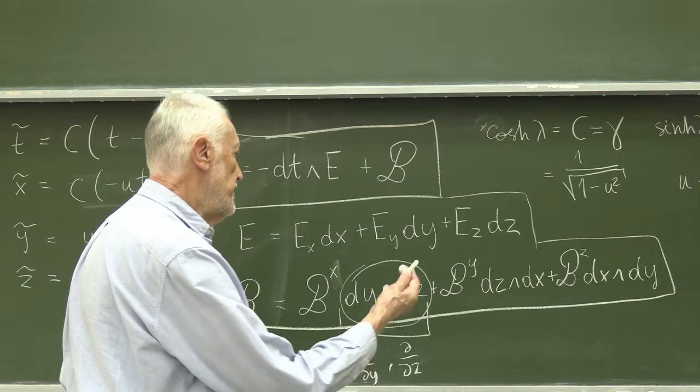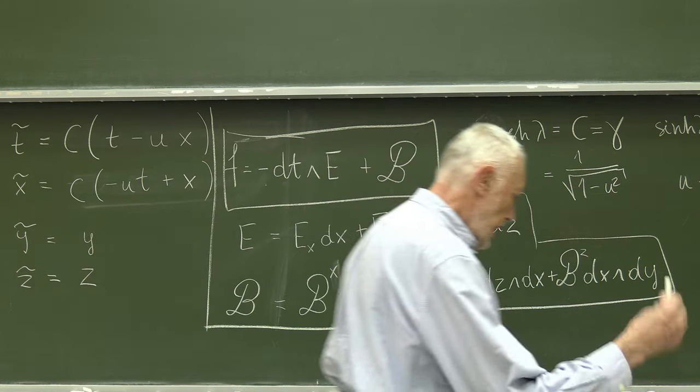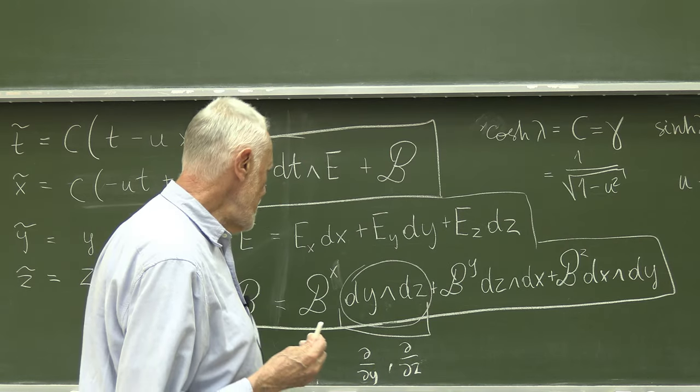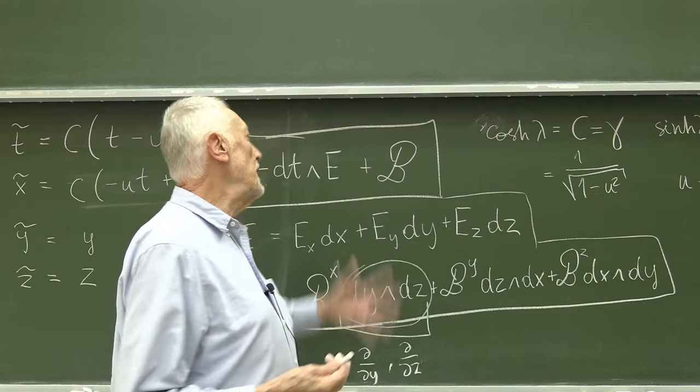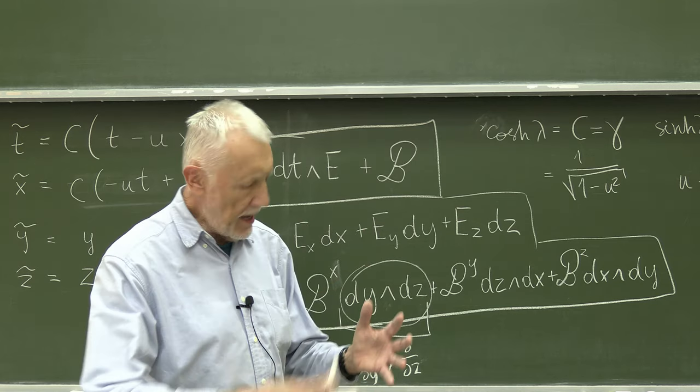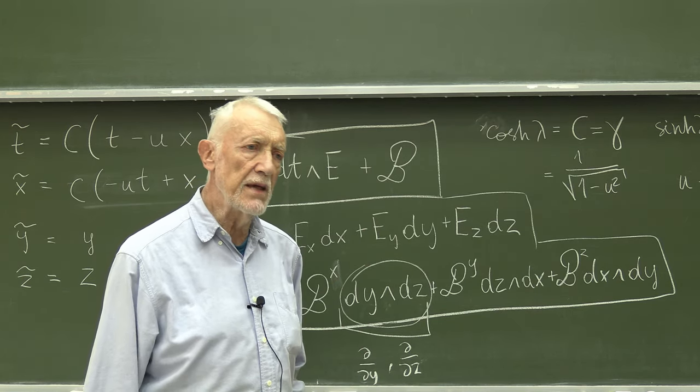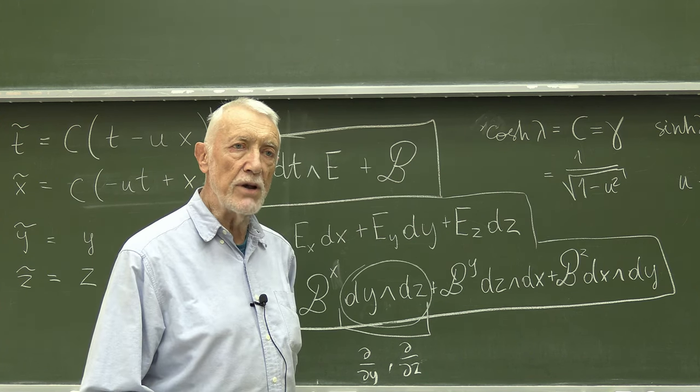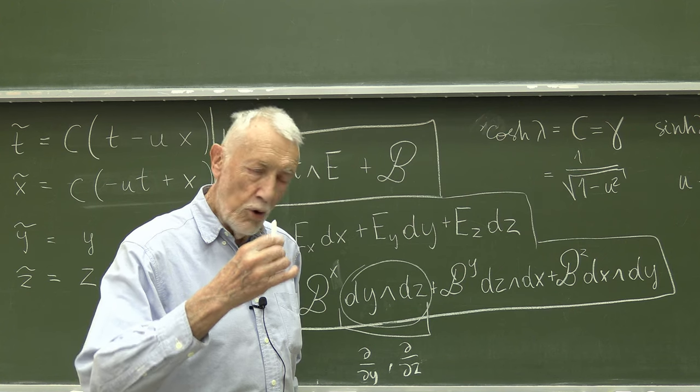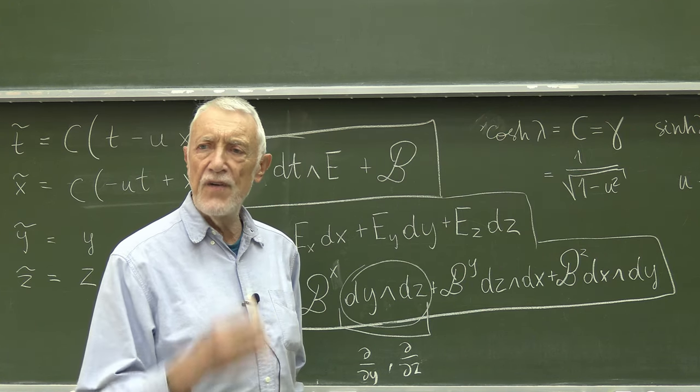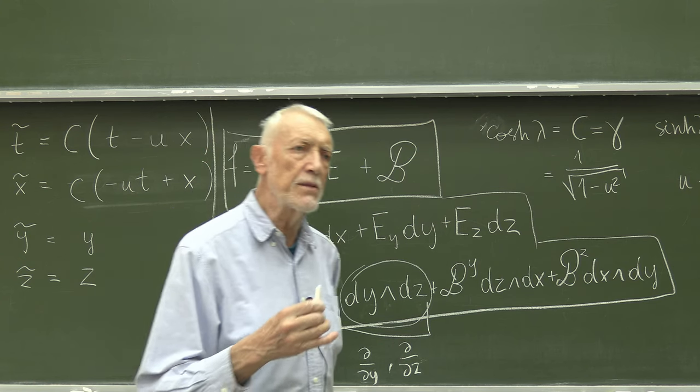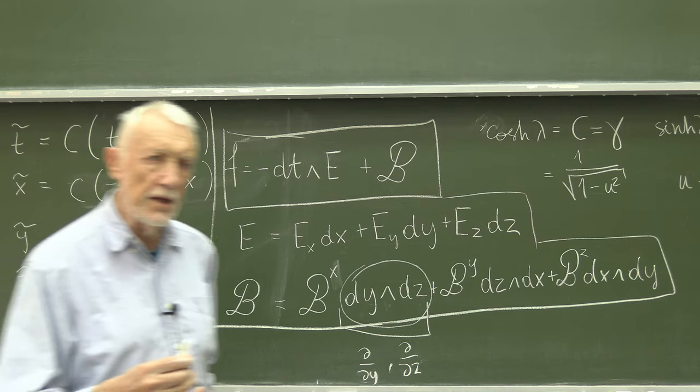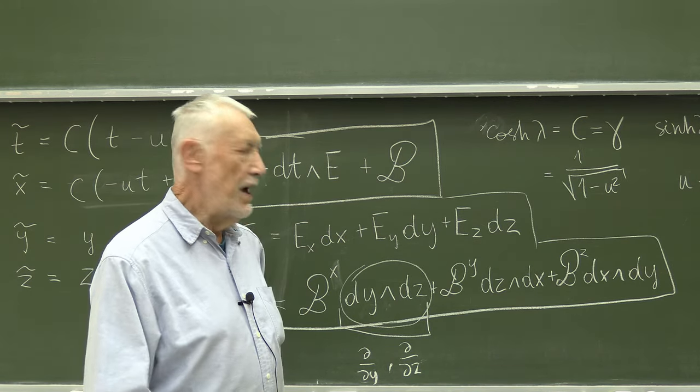These totally anti-symmetric covariant tensors are extremely important in mathematics. The great discovery by Einstein was that they encode in a nice way electromagnetic fields. But then later on, it turned out that the use of those totally anti-symmetric covariant tensors is very important, and practically all important physical quantities may be encoded.